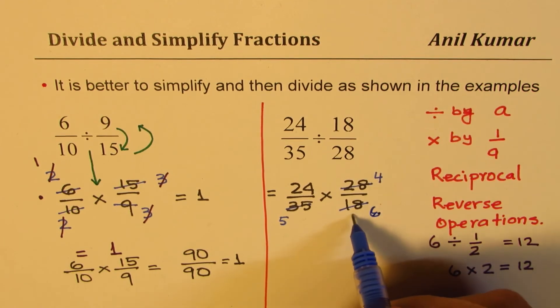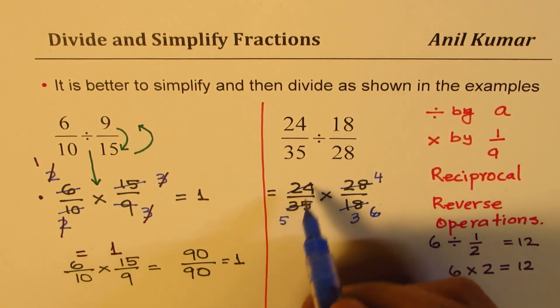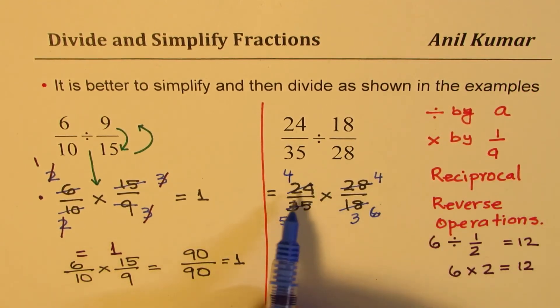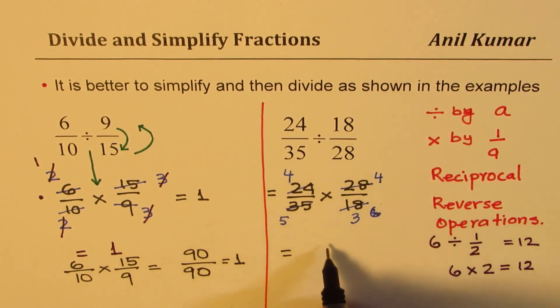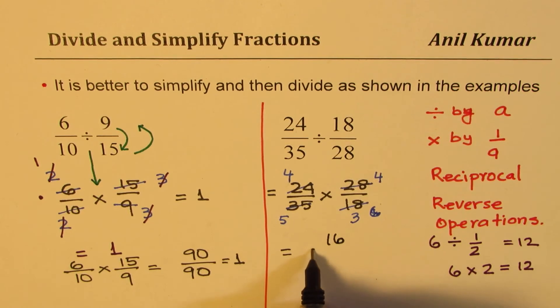Now check—can you simplify it further? No, we cannot. Numerator is even and we do not have any even term in the denominator. So now multiply the numerators, which is 4 times 4 as 16, and divide by what is there in the denominator: 5 times 3, 15.